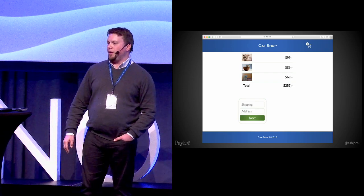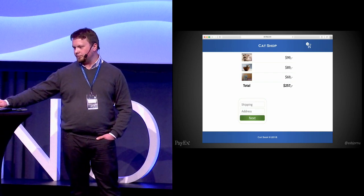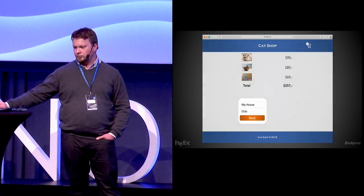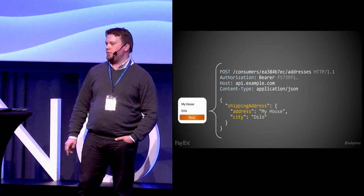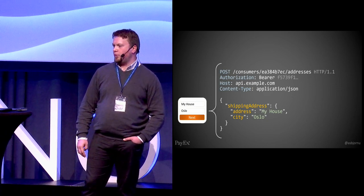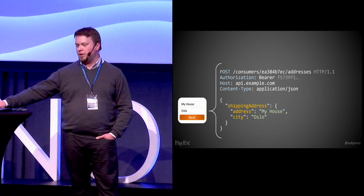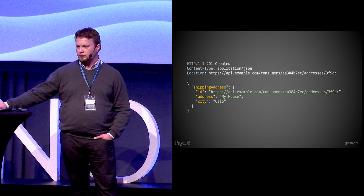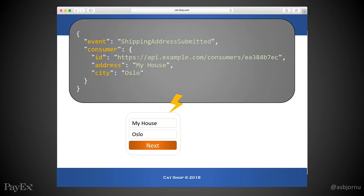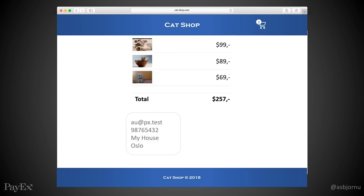So we get a form asking for our shipping address. Let's fill out the form and see what happens. As we submit the form, a shipping address request is performed against the backend API, based on the operation we found in the response from the identification request. The response from the shipping address request might look like this — a 201 Created response translated into a shipping address submitted event, raised with a callback in JavaScript via postMessage. This event is something the shop is interested in since it needs to ship the picture to us.